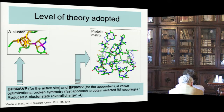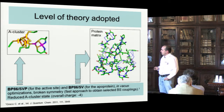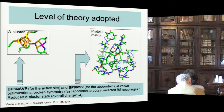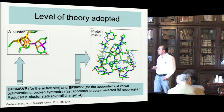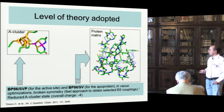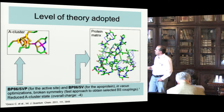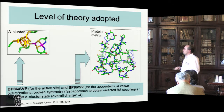Which level of theory did we use? Basically, the A-cluster was treated at BP86/SVP level. We used broken symmetry, keeping the spin coupling at the broken symmetry level always the same in the various models using our approach to localize spins on the atoms. All the protein matrix was also treated at BP86/SVP level. For the moment, we have been considering only the reduced form of the A-cluster; the overall system is therefore minus 4 in charge, and the calculations were done in vacuum.